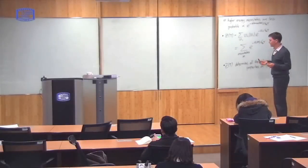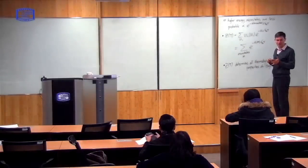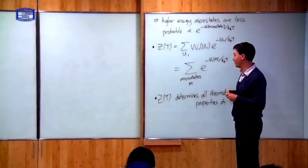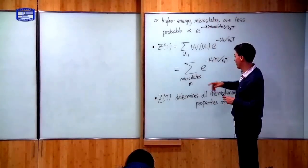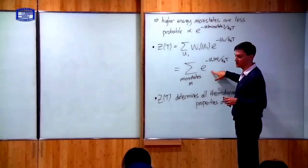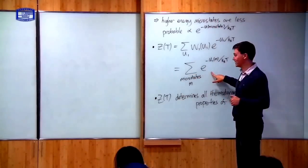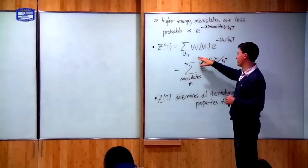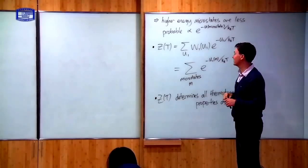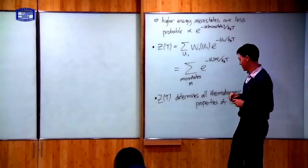So I said I'd give some examples, and I will. We'll look again, first of all, at the paramagnet example. I'll show you how you can use this equation to find the properties of the paramagnet, rather than going directly from the numbers of microstates or the entropy.